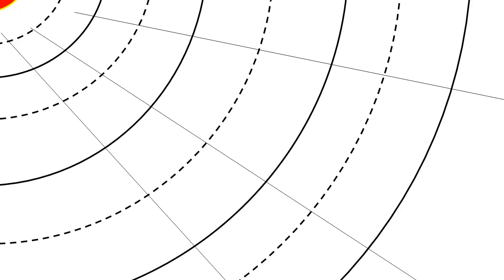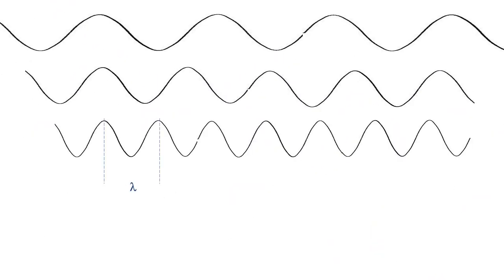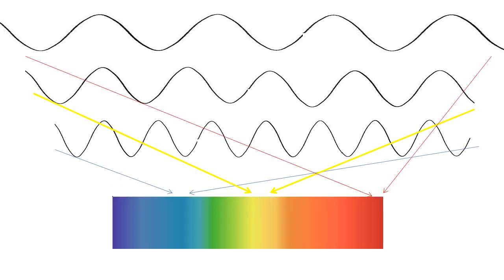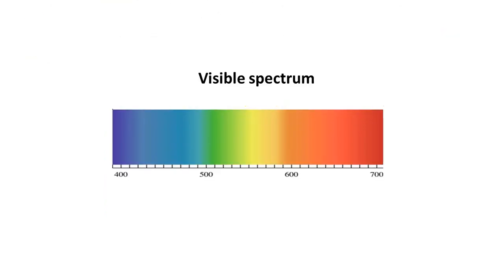The sunlight we see every day is a mixture of light of different colors. Light travels in the form of waves, and the wavelength determines the color of the light. The visible spectrum goes from violet to red, corresponding to wavelengths in the air of about 400 nanometers to 750 nanometers.